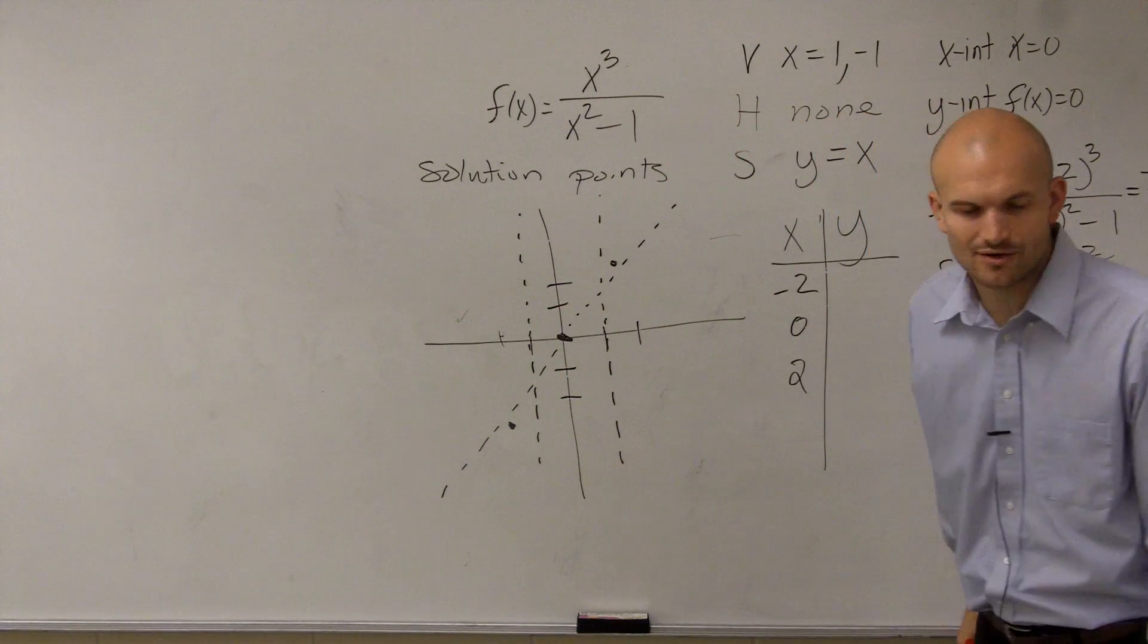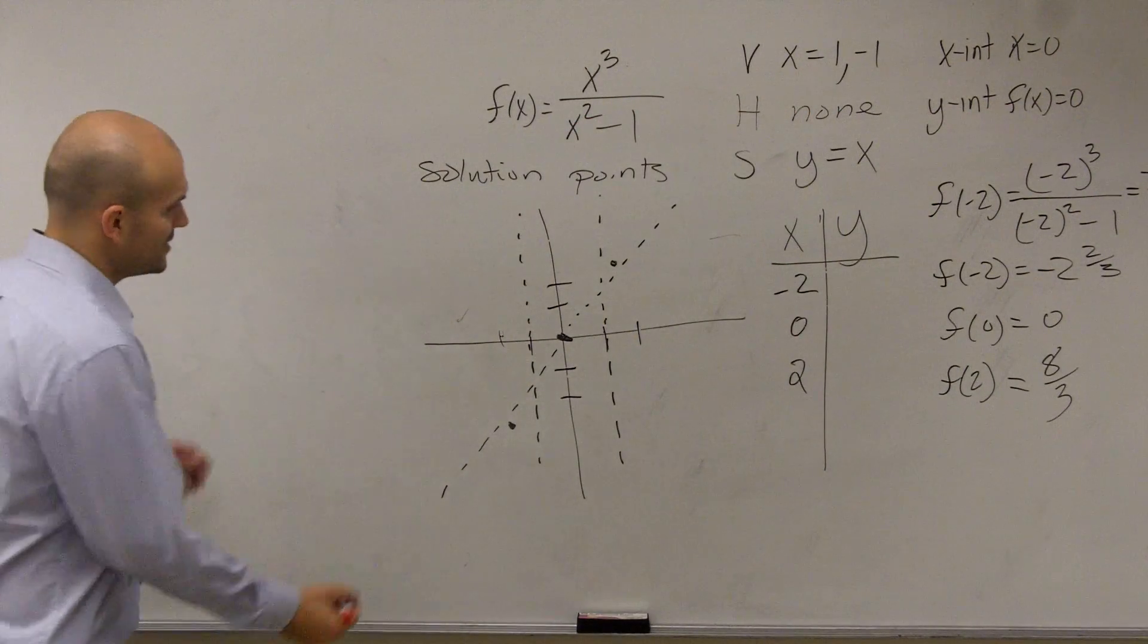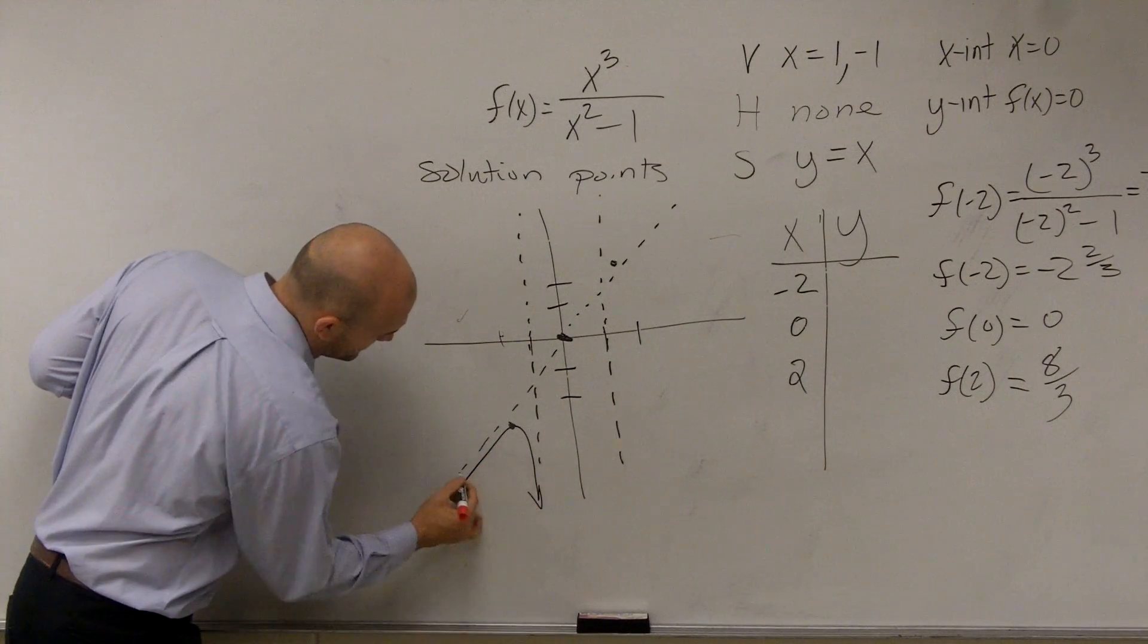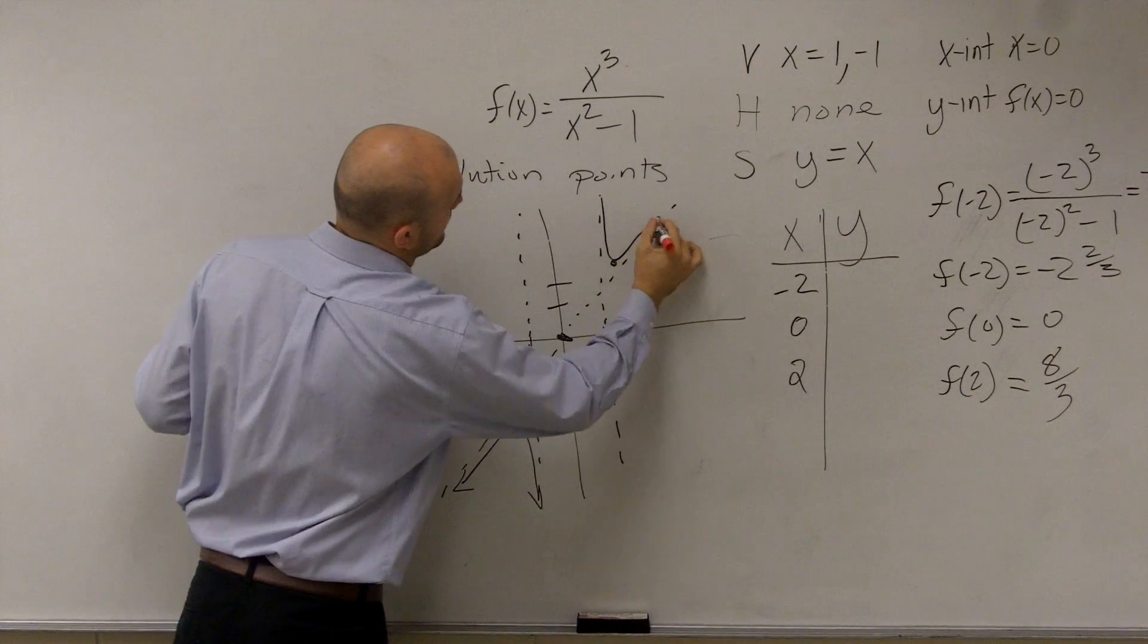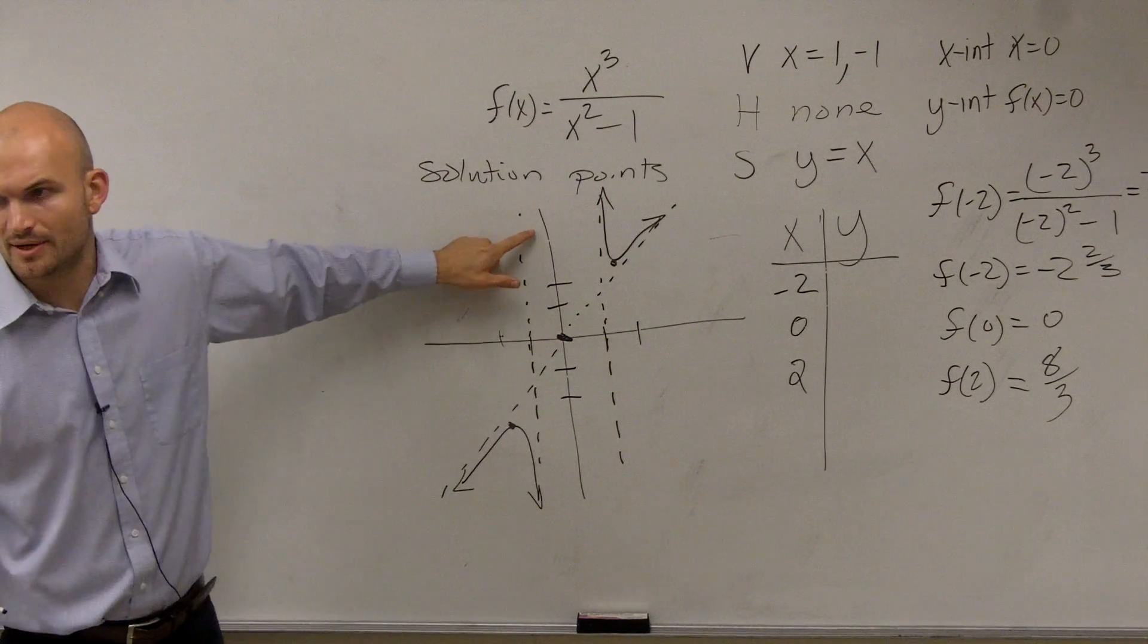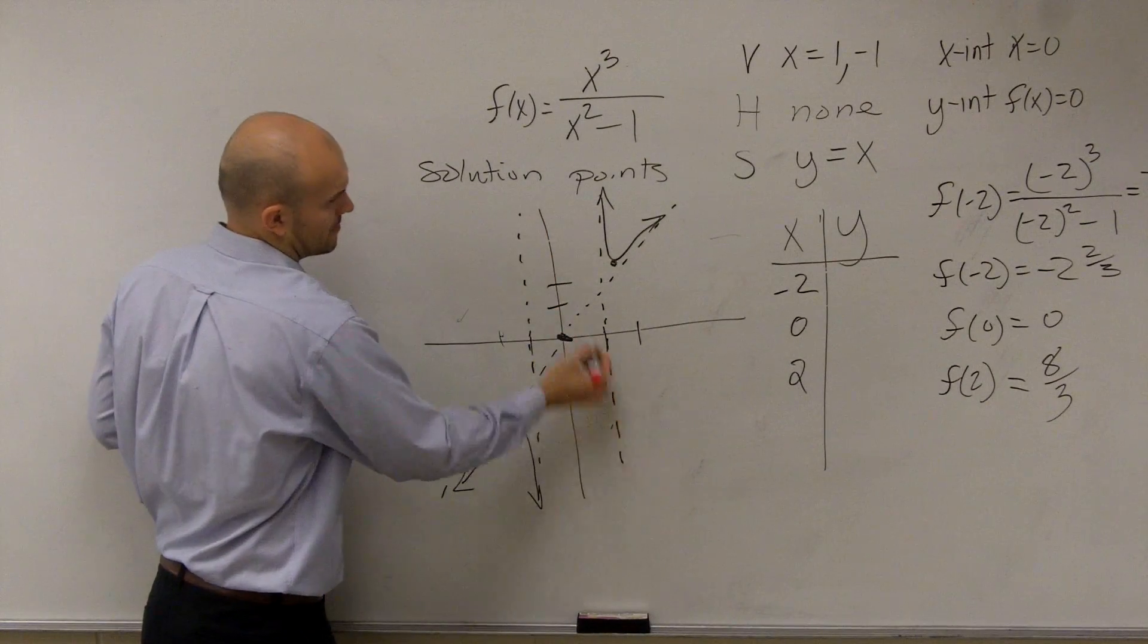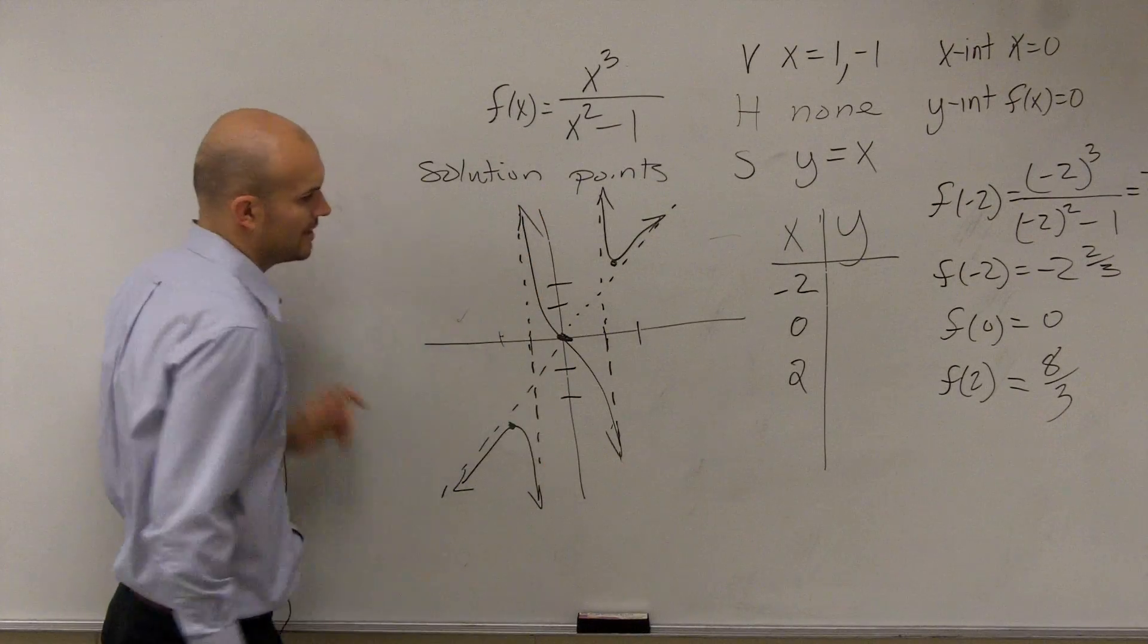So it's going to look something like that. Now I told you guys to pick two points. I don't have time to go through two points. But if I look at my calculator, I know I end up getting that this graph is going to look something like this. So it's going to go through and approach like that.